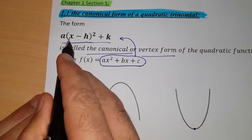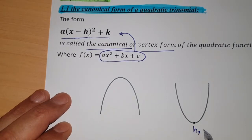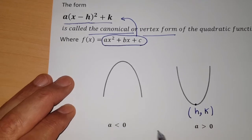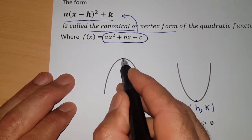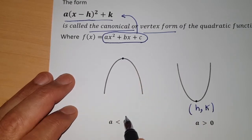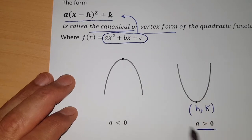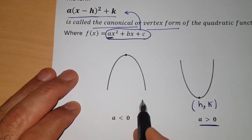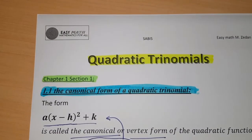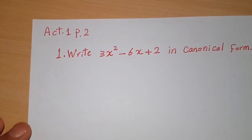In the vertex form, x minus h all squared plus k, h and k represent the vertex of the parabola. From this vertex you will know many pieces of information to help study the function. When a is positive the parabola opens upward, and when a is negative the parabola opens downward.